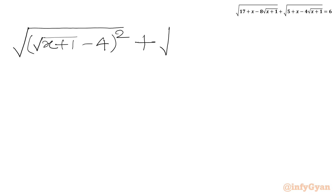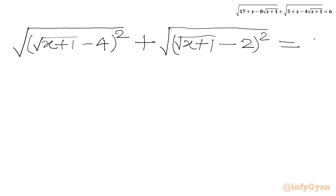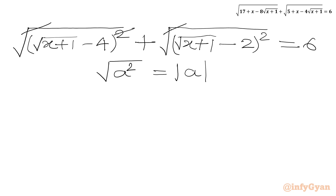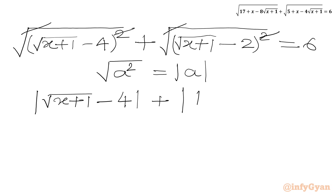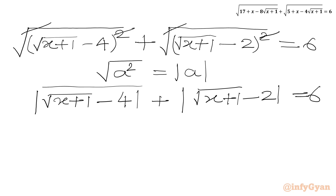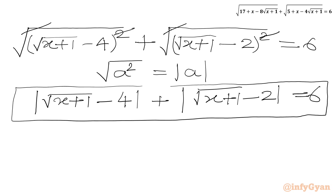Plus square root of x plus 1 minus 2, whole squared, equal to 6. Now we cancel square root with the square, because square root of a squared equals the absolute value of a. So we can write: mod of (square root of x plus 1 minus 4) plus mod of (square root of x plus 1 minus 2) equal to 6. This is a modulus equation which we are going to solve by cases.